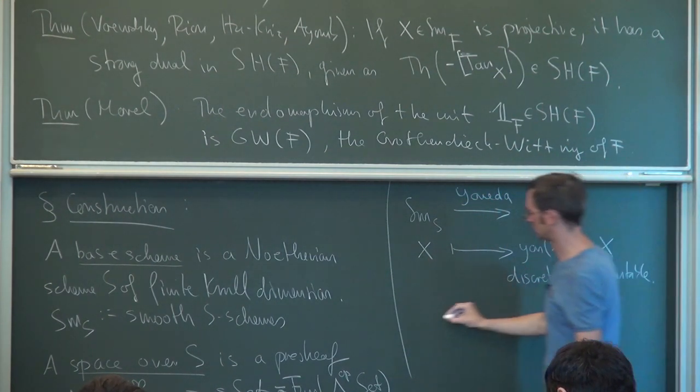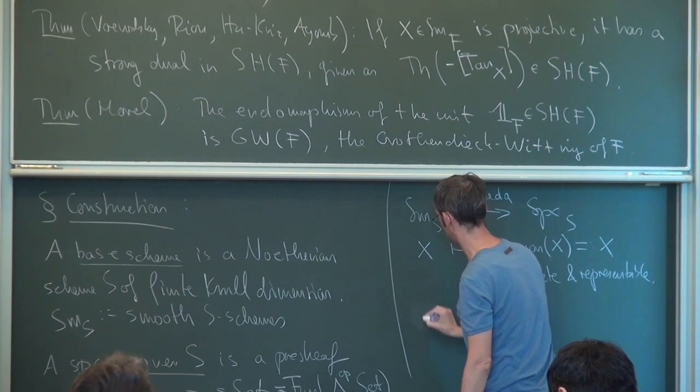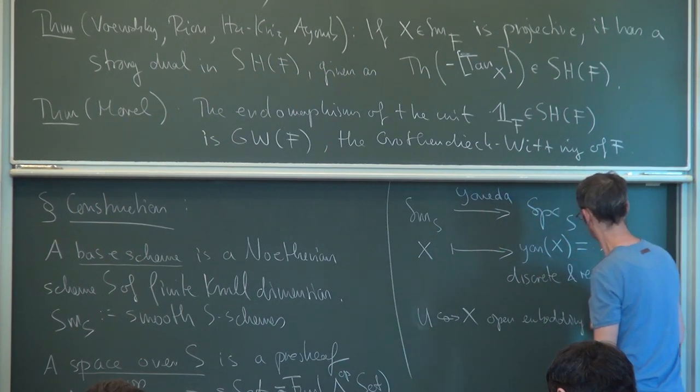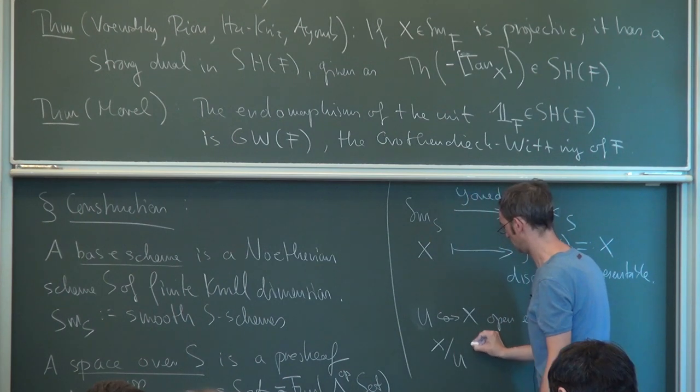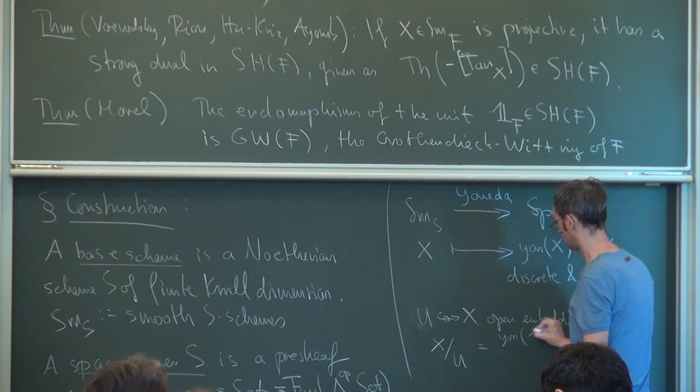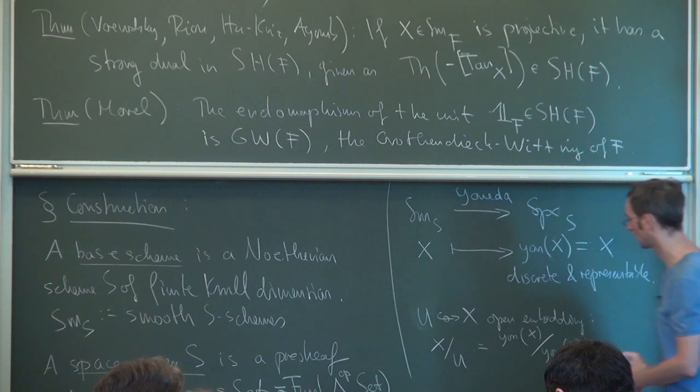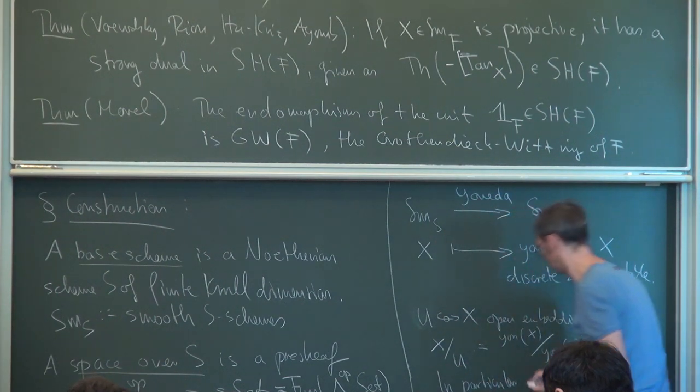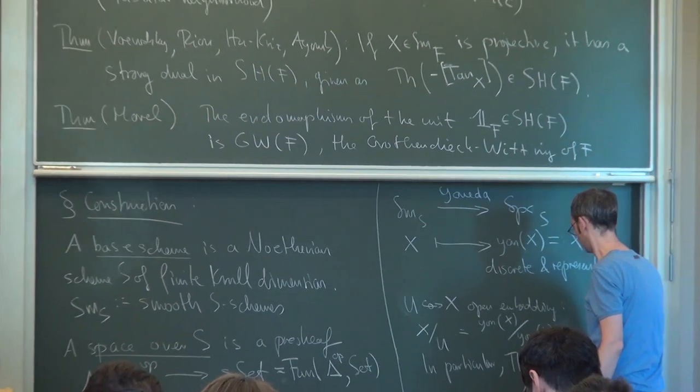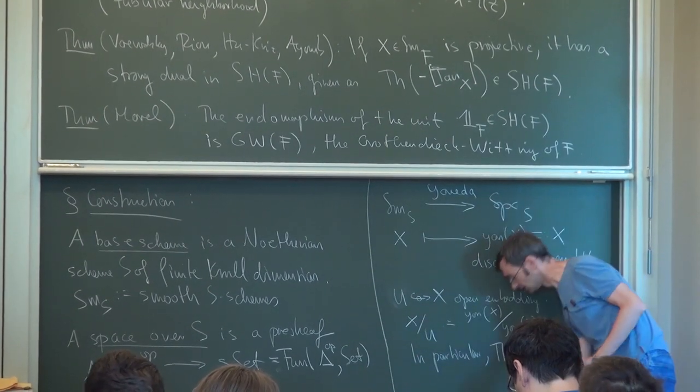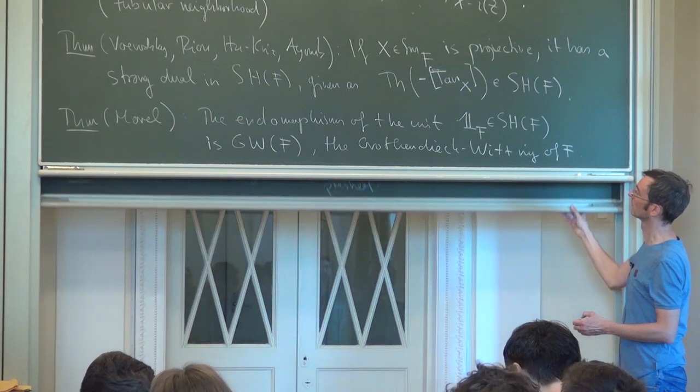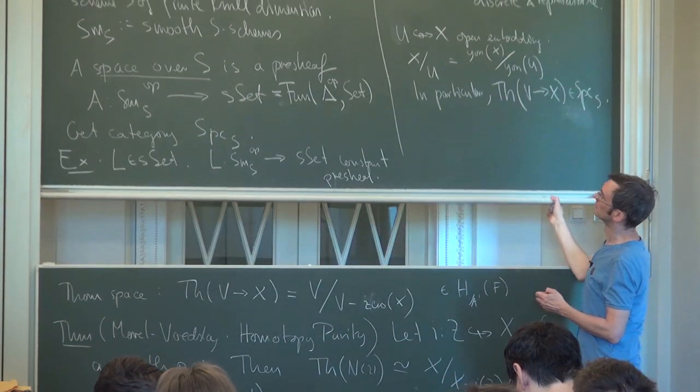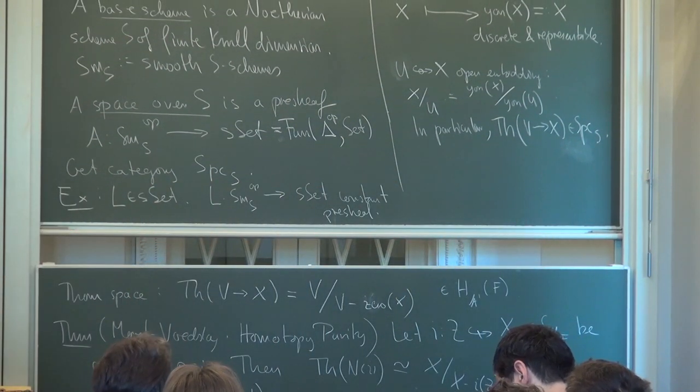Okay, and in a certain sense the category of spaces is of course generated by these two: by the constant simplicial presheaves and by the discrete representable presheaves. But other constructions we have are of course this Thom space construction, which is still on the board. So maybe more generally, if U to X is an open embedding, then we have X modulo U. So this is the presheaf given as this quotient. And in particular, the Thom space of some vector bundle exists in this category of spaces over S.